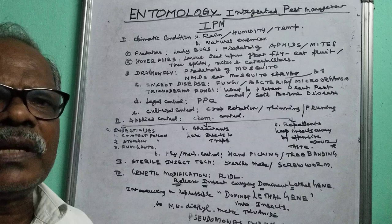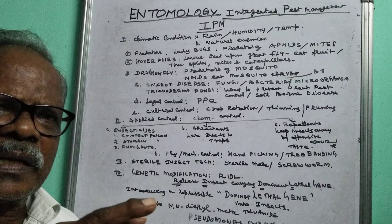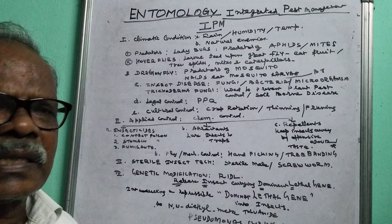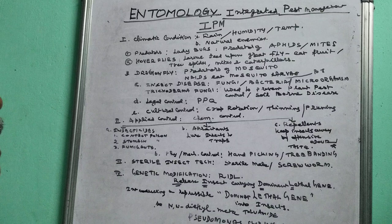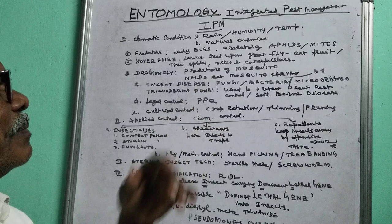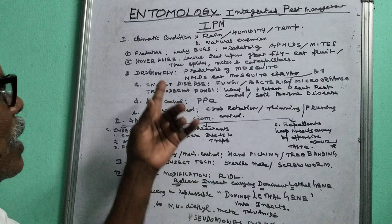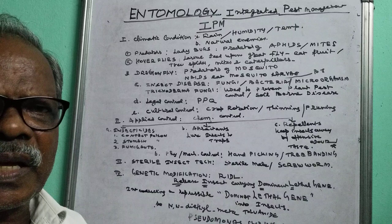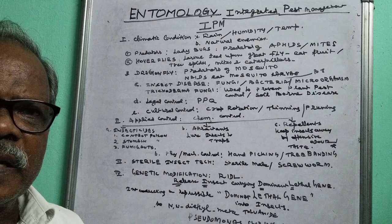Another thing is natural enemies. We introduce natural enemies which will devour the insects — that is called natural enemies. For example, predators. Predators are insects which devour other or smaller insects. Ladybugs are predators which eat aphids and mites. Hoverflies eat larvae, spider mites, and caterpillars. Whenever hoverflies are introduced in the atmosphere, they will feed upon larvae and also tree spider mites.